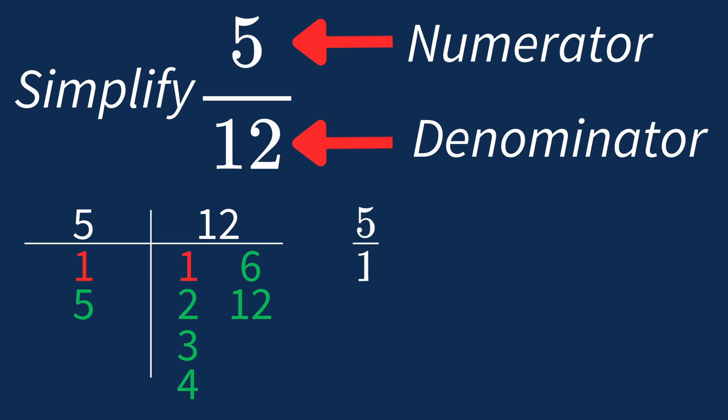Dividing the numerator 5 by 1 gives us 5. Dividing the denominator 12 by 1 gives us 12.